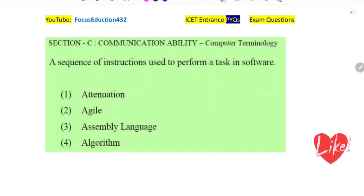First question: a sequence of instructions used to perform a task in software. Instructions means the programmer, the person who writes the code, will give some instructions or lines of program. We write several instructions in the program. This is what is known as algorithm. Algorithm means sequence of instructions used to perform a task in software. The correct answer here is algorithm.